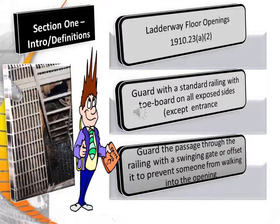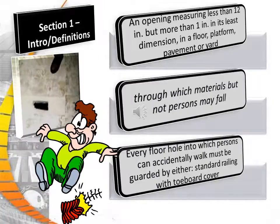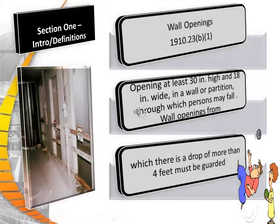OSHA defines ladderway floor openings under .22a2, which states: guard with a standard railing with a toe board on all exposed sides. Guard the passage through the railing with a swinging gate or offset it to prevent someone from walking into the opening. An opening is defined as measuring less than 12 inches but more than 1 inch in its least dimension in a floor, platform, pavement, or yard through which materials, but not persons, may fall. Every floor hole in which persons can accidentally walk must be guarded either by a standard railing with a toe board or cover. A wall opening at least 30 inches high and 18 inches wide in a wall or partition through which persons may fall — with a drop of more than 4 feet — must be guarded.